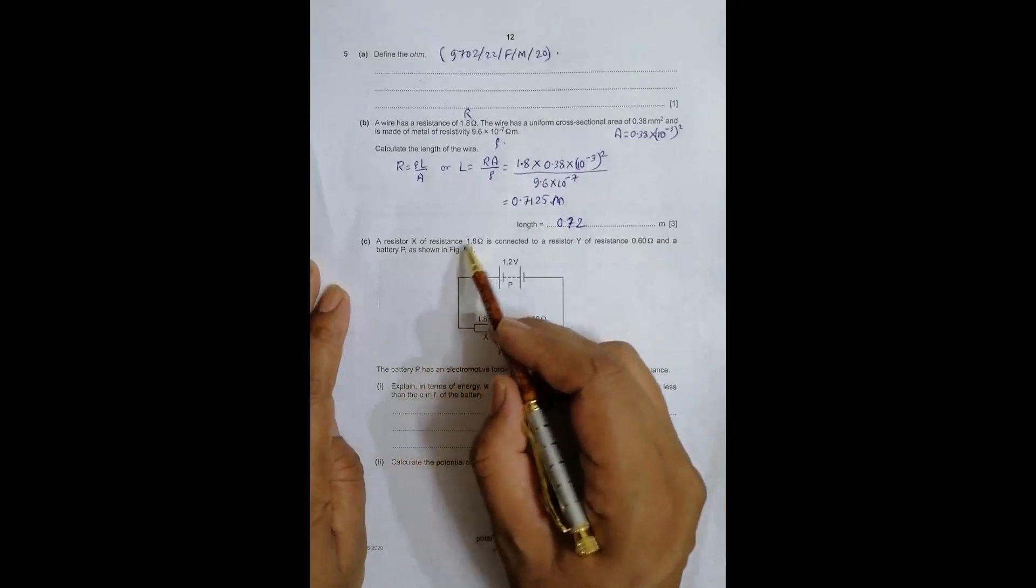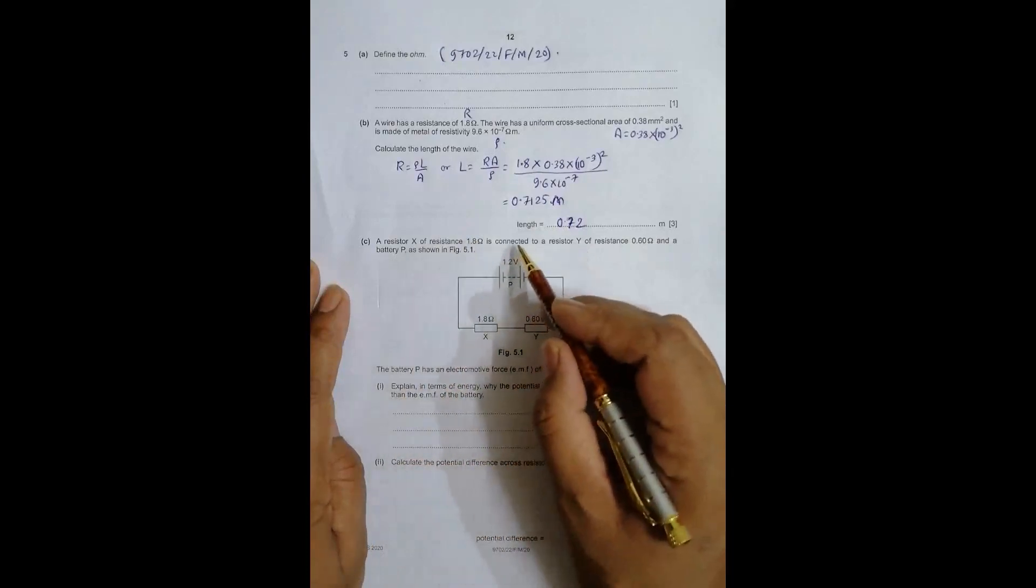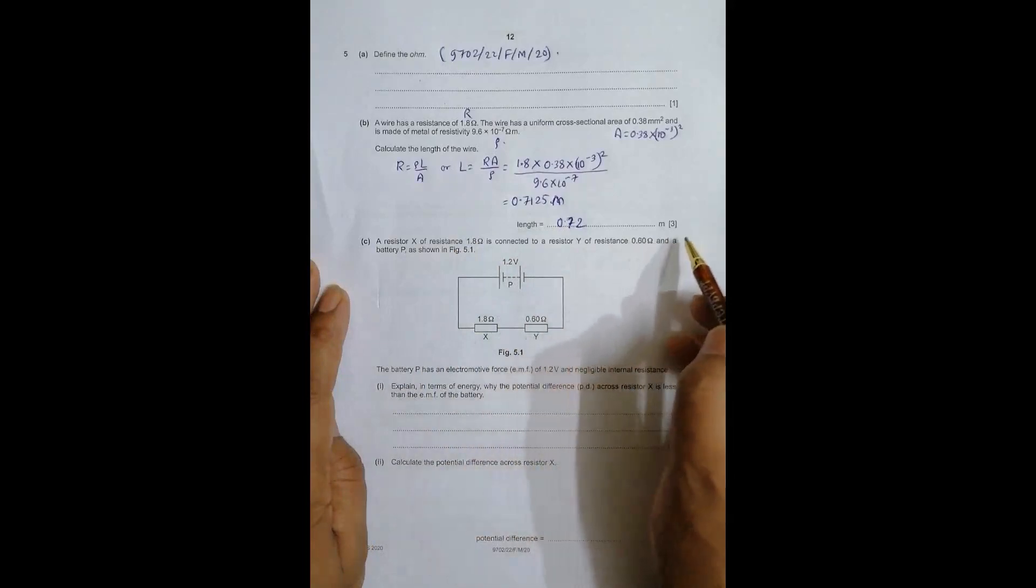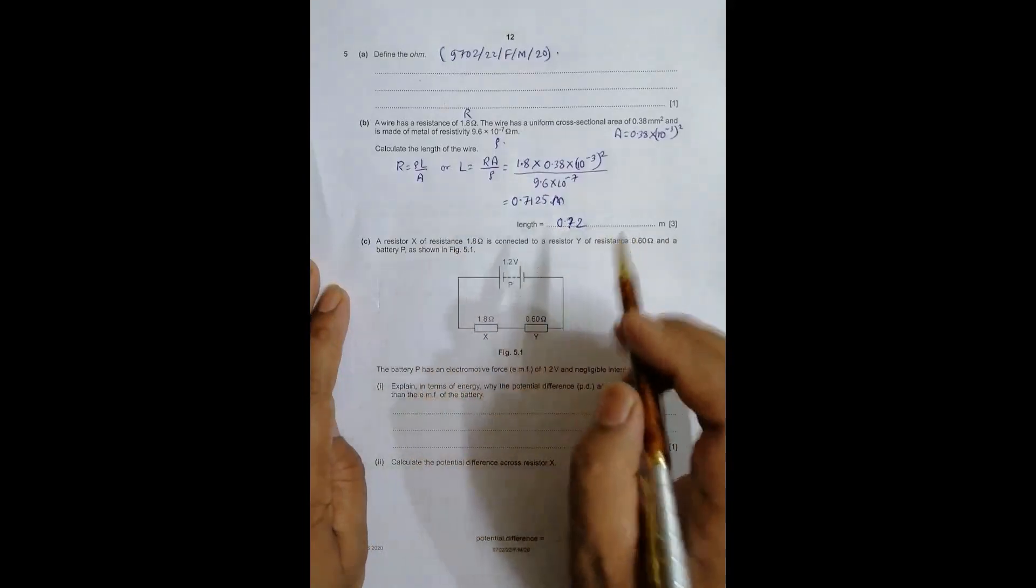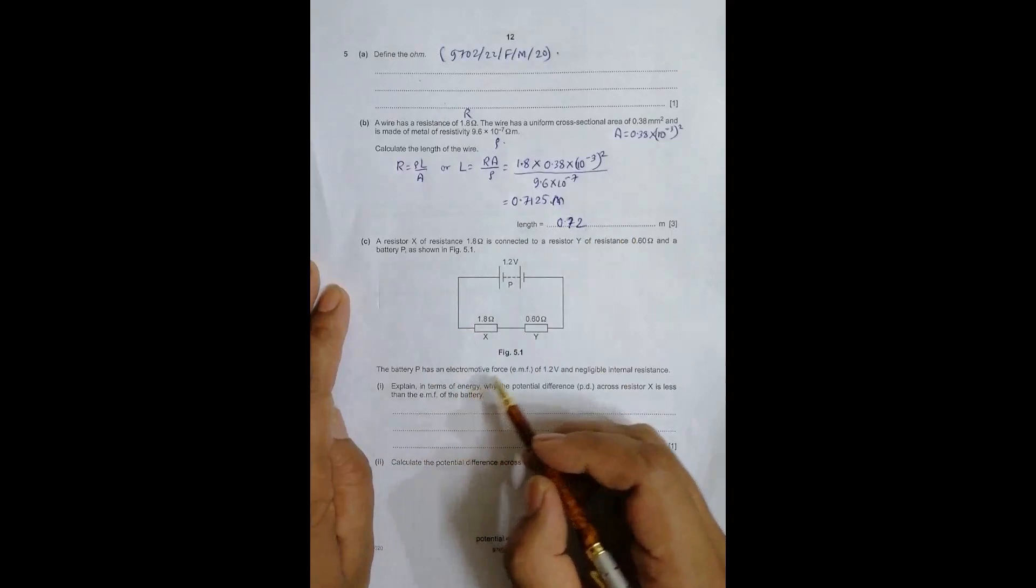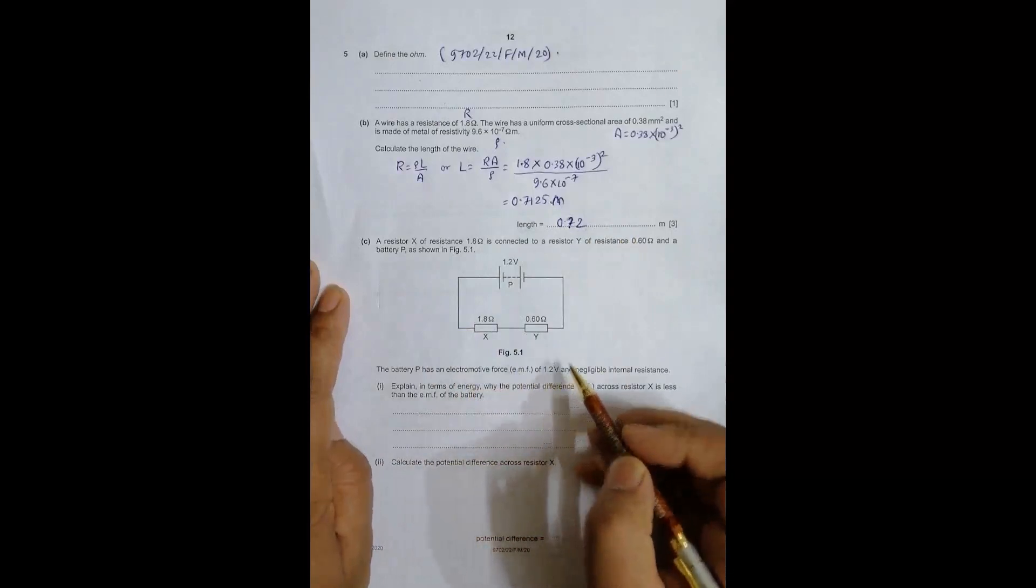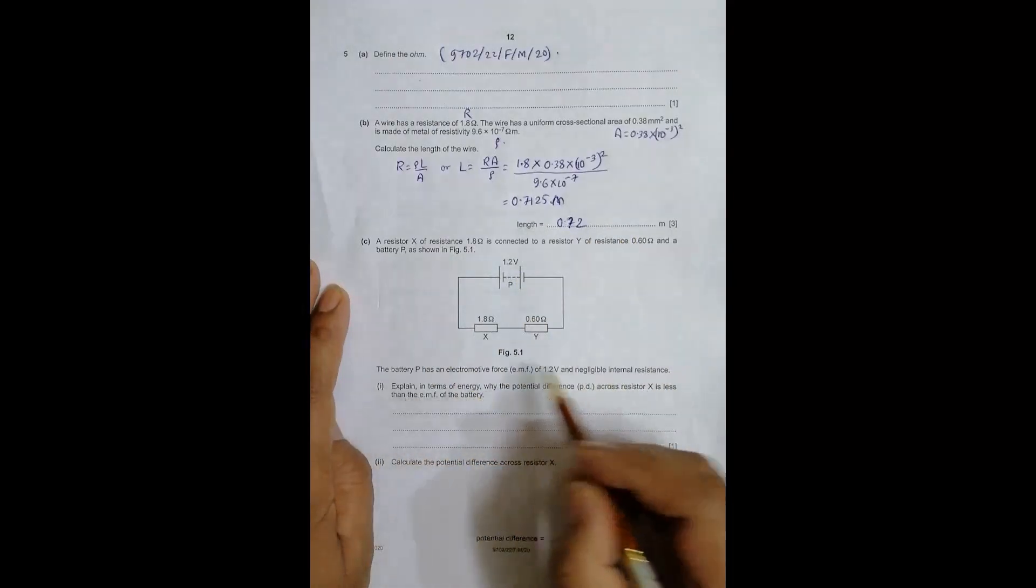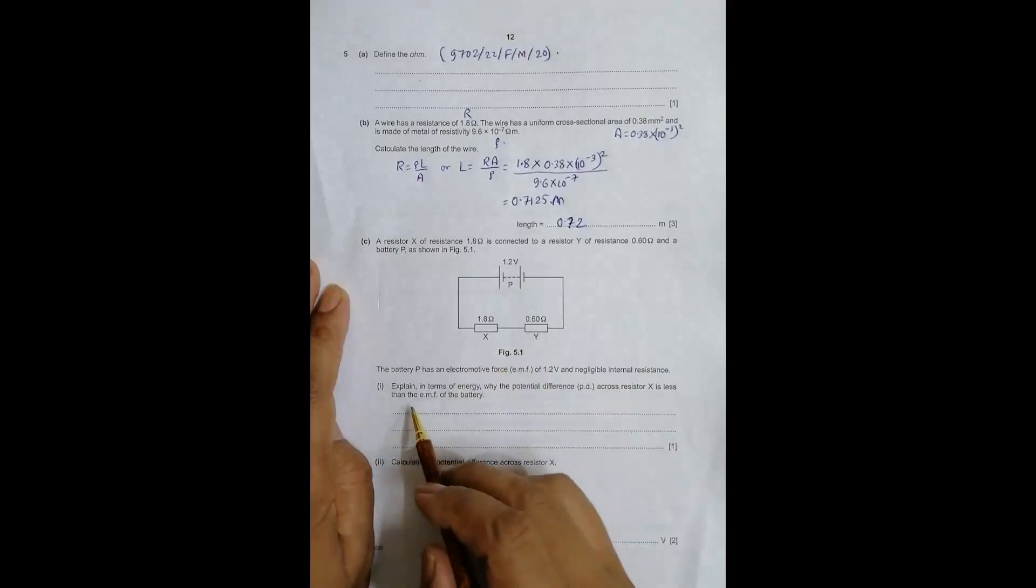Part C says resistor X of resistance 1.8 ohm is connected to resistor Y of resistance 0.68 ohm and battery P. Battery P has an EMF of 1.2 volts and negligible internal resistance. Explain in terms of energy why the PD across resistor X is less than the EMF of the battery.